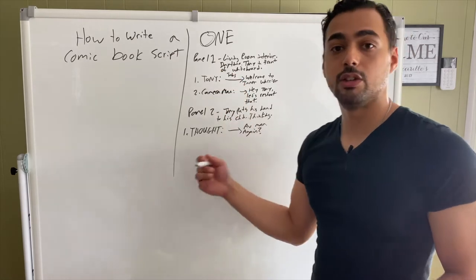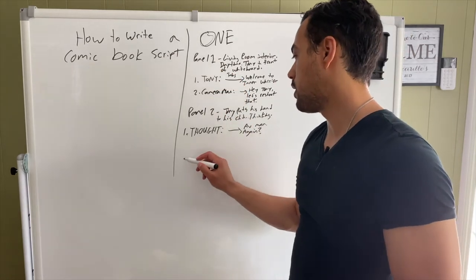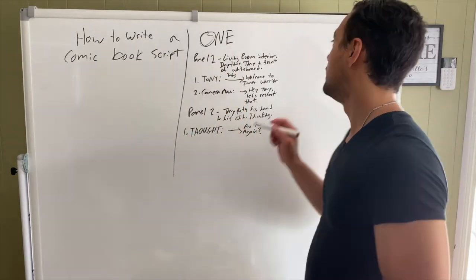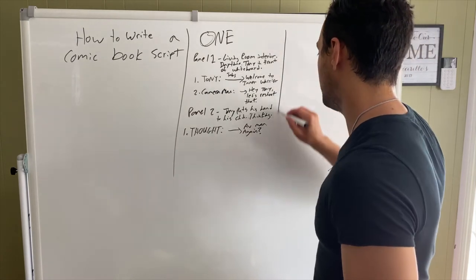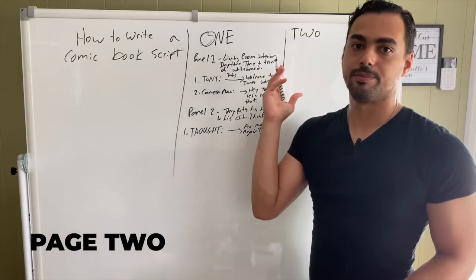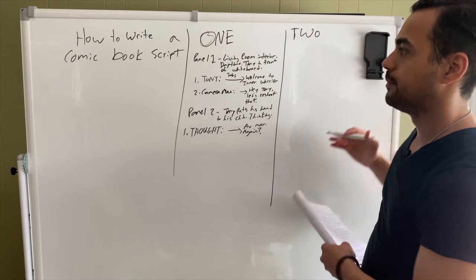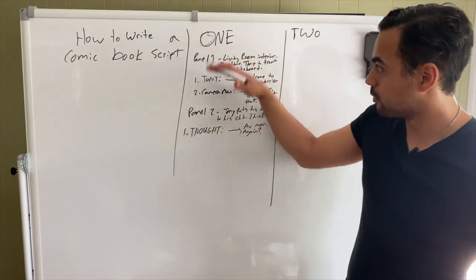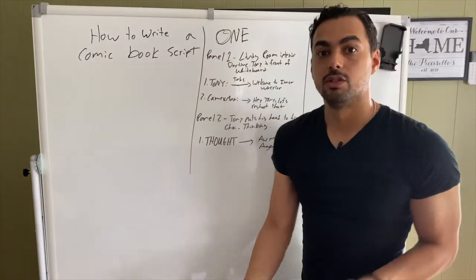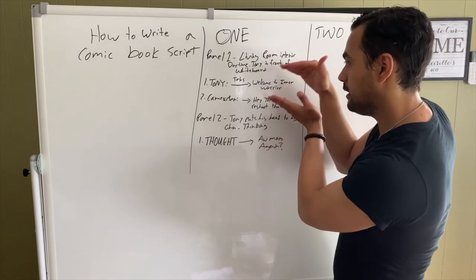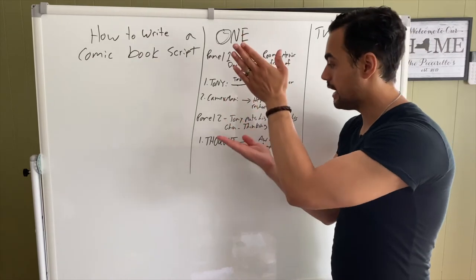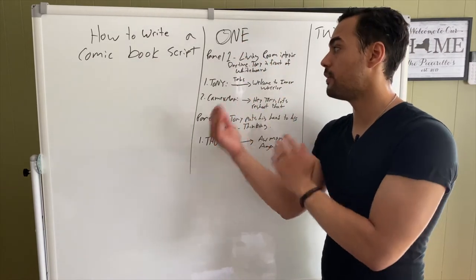You would do this until you get to panel four, five, or six, depending on how much you want to have on one page. Now let's say we're going to do a second page. On the top of that page, we put "Two" — this is the second page. You can see this is how you format it: page one, page two. It makes it easy for the artist and for the letterer to see what has to be drawn and what has to be lettered, making the job easier for both.